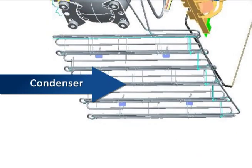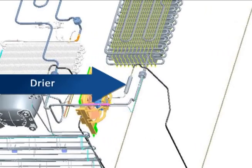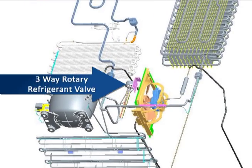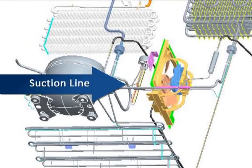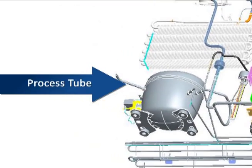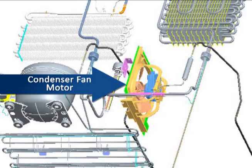Condenser. Heat loop. Dryer. Three-way rotary refrigerant valve. Check valve. Suction line. Process tube. Condenser fan motor.